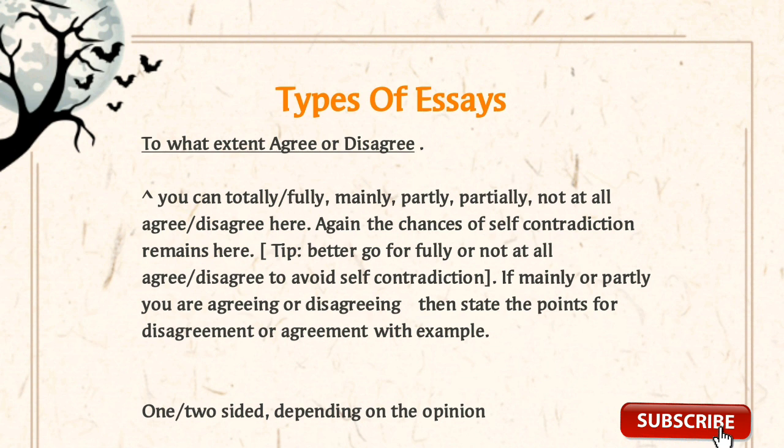In both types — 'do you agree or disagree' and 'to what extent do you agree or disagree' — you give your ideas, explain them, provide supporting examples, and close with your opening idea. The 'to what extent' essay is one or two-sided depending on your answer: if you go totally or not at all, it's one-sided; if mainly or partly, it becomes two-sided.